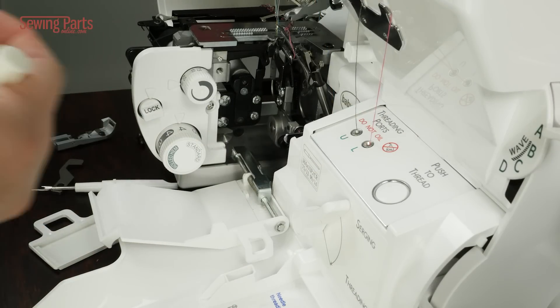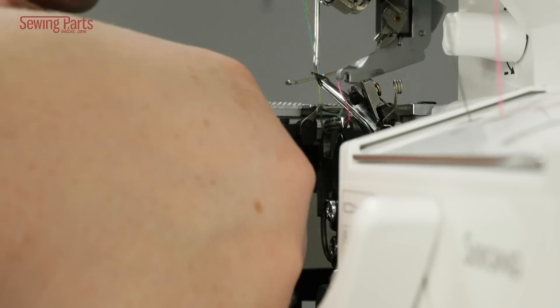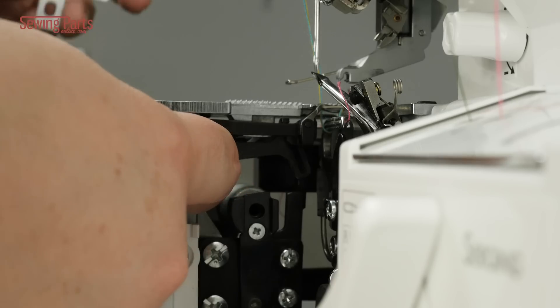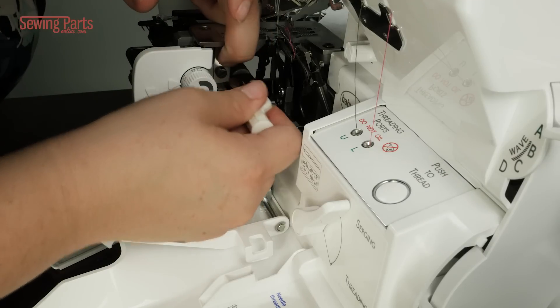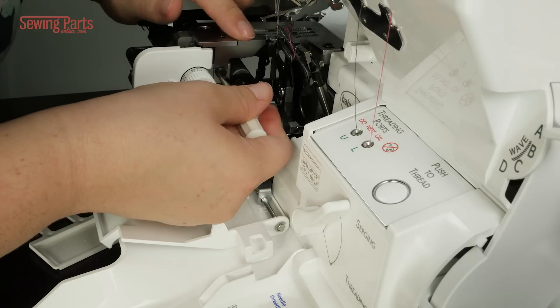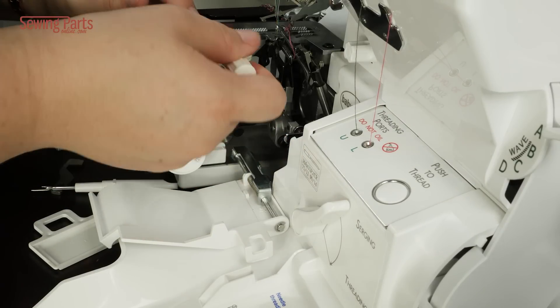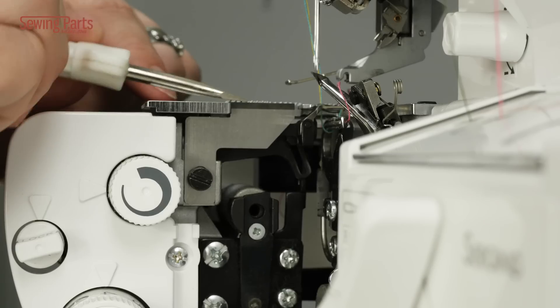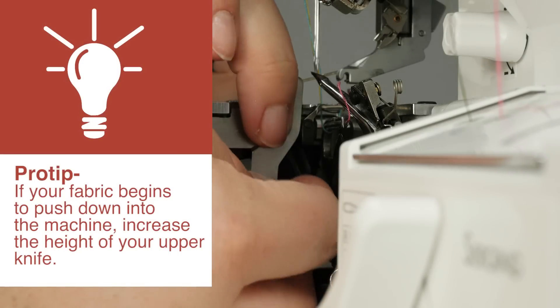Now let's put it back together in the opposite way that we took it off. So we took off the upper knife first and then we took off the lower knife. Now we're going to put back on the lower knife. Scooch on up there, little knife. Got to make sure that it's positioned perfectly so it lines up with the needle plate. It needs to be flush.